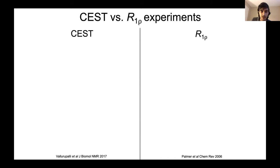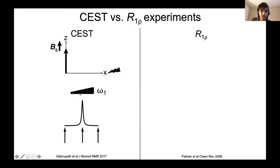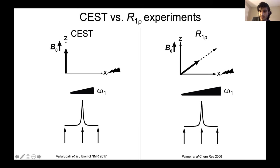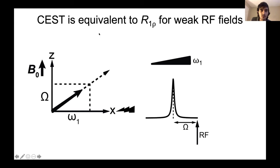To motivate the method, I'll briefly explain CEST and R1 rho. In the CEST experiment, magnetization is along the z-axis, you apply a weak radio frequency field, and change the frequency at which you apply it. In R1 rho, you monitor magnetization along an effective field when you apply a spin lock and vary the frequency, measuring the relaxation along that effective field. In CEST, you monitor the amount of z-magnetization remaining.